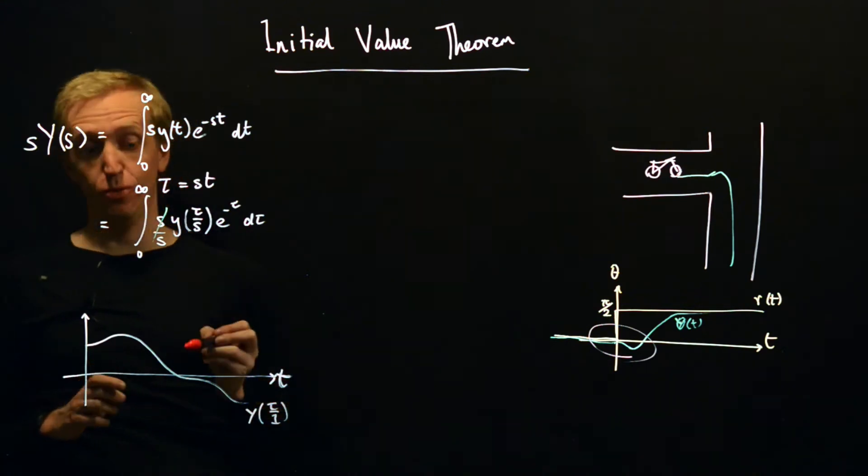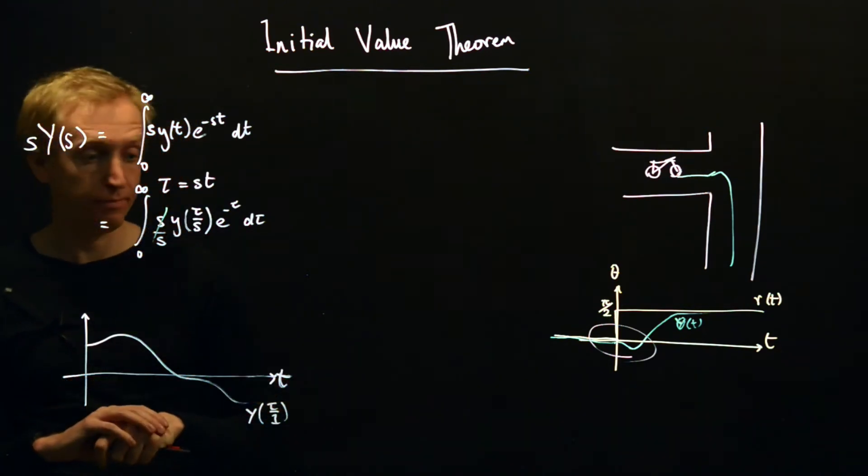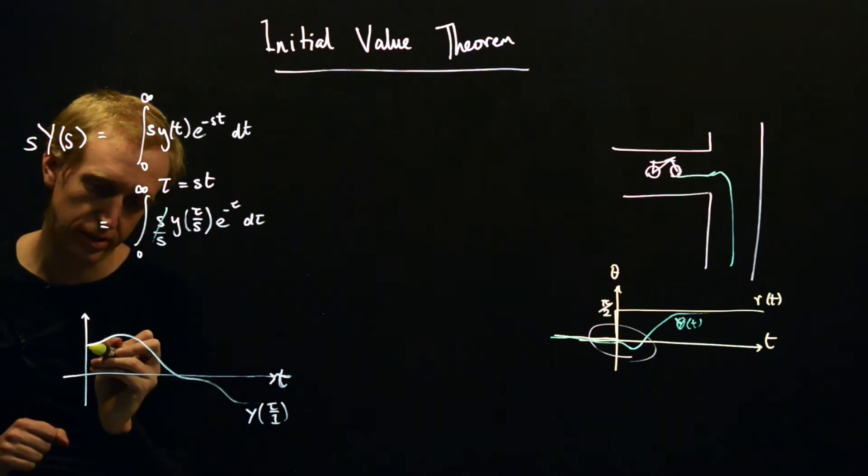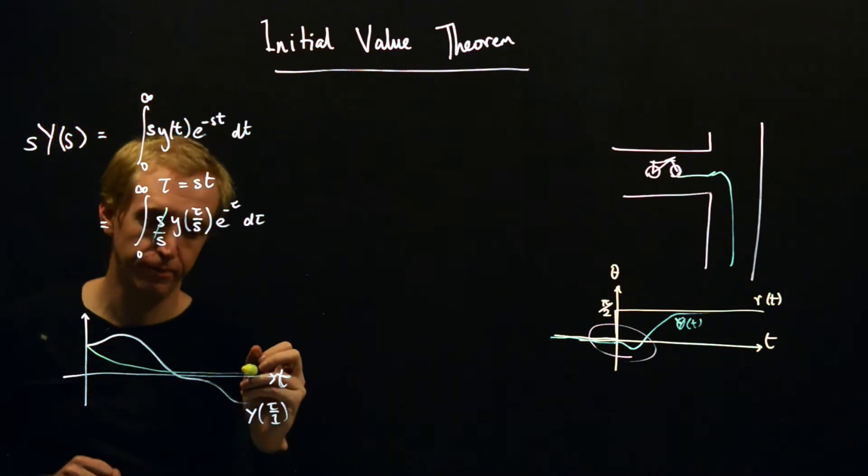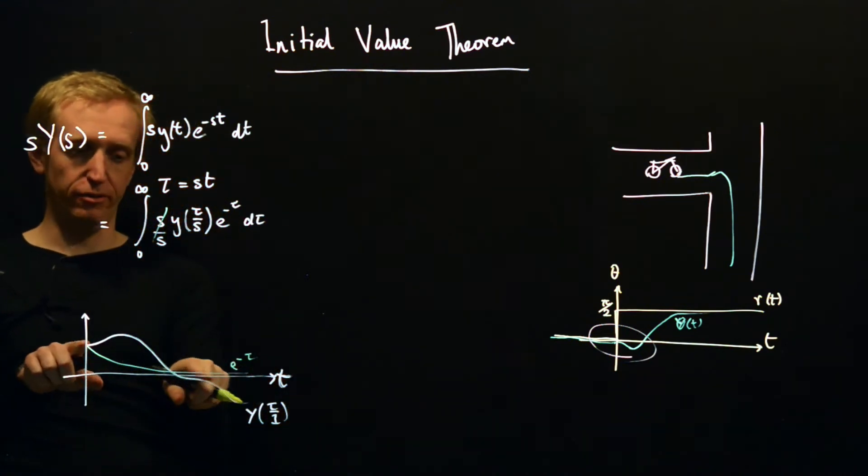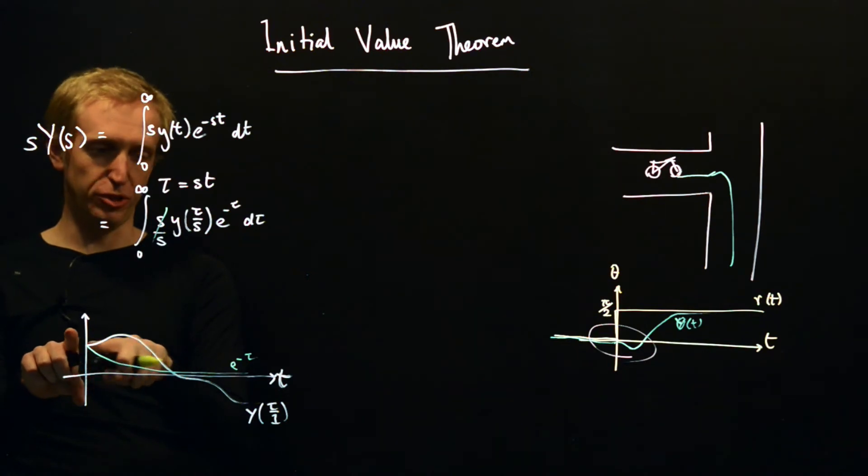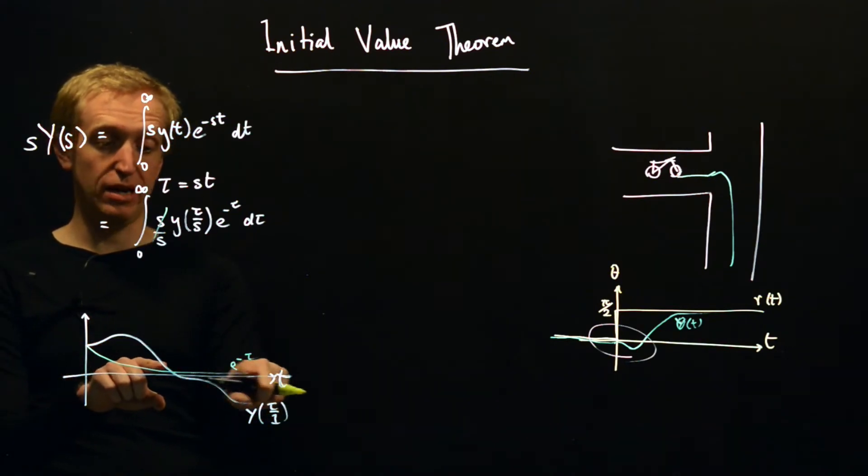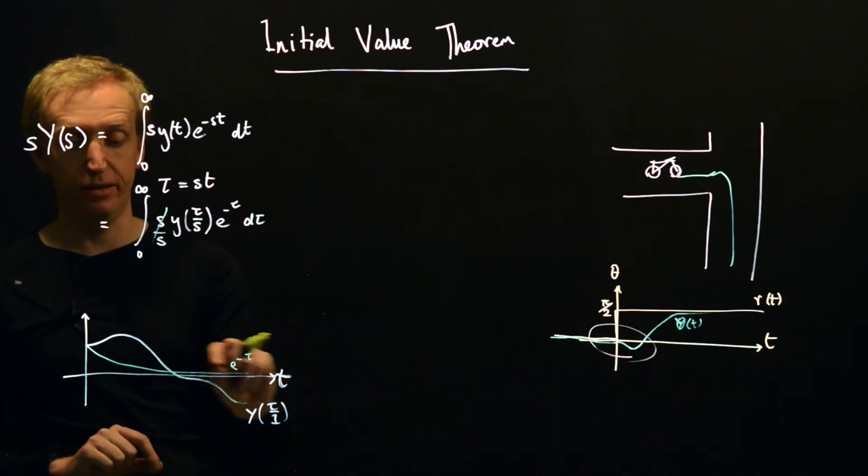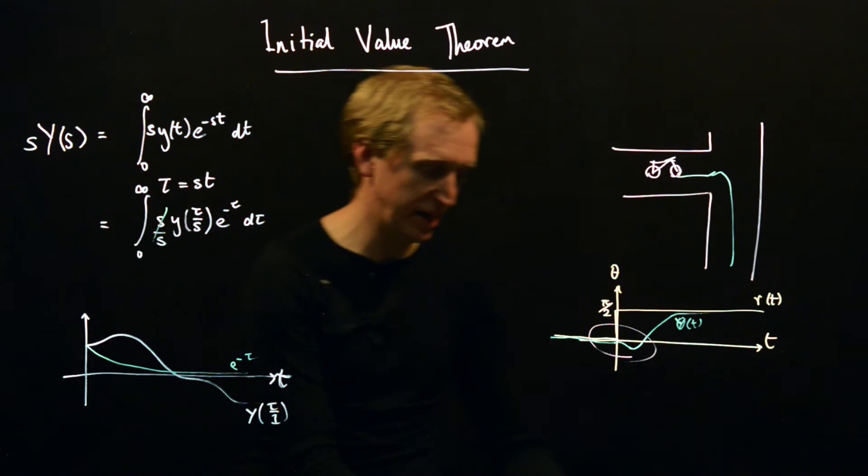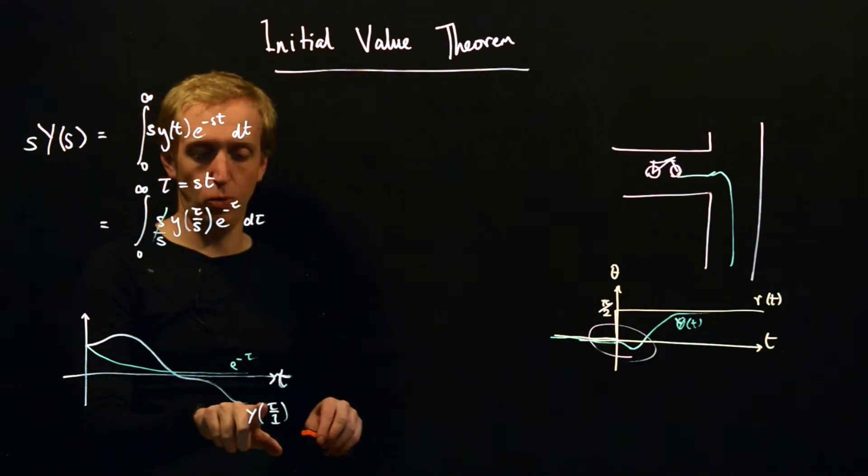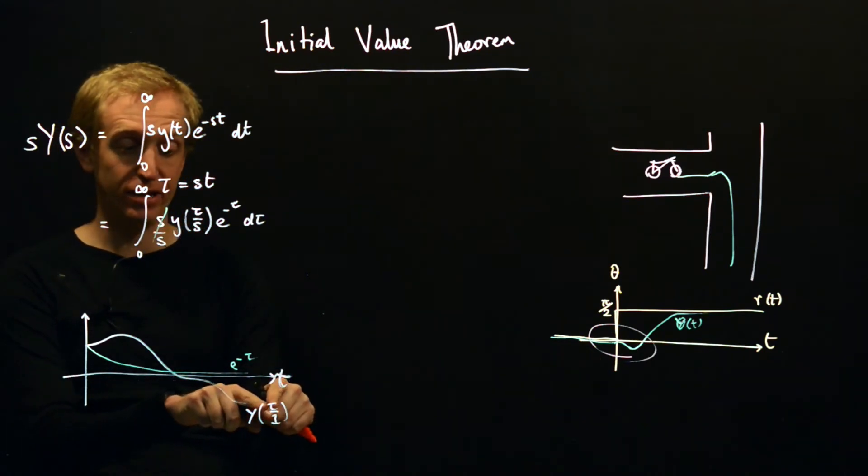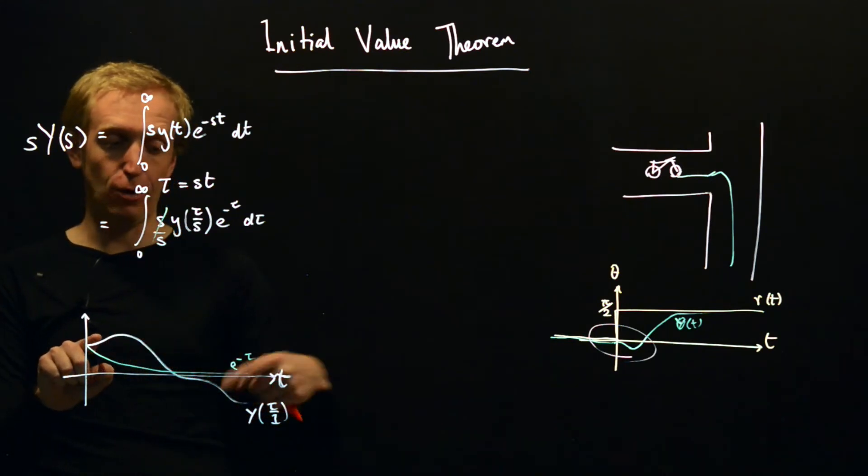Suppose that this is y(τ/1), so we're setting s equal to 1 and this is what y(τ) looks like. e^(-τ) just looks like that. So the product of these two looks like, for small values of τ it looks like y(τ/s) and then for large values of τ it collapses down to zero. And now what happens when we make s larger? If this is what y(τ/1) looks like, then y(τ/2) looks like stretching out the axis. τ has to get twice as large for you to output the same number.